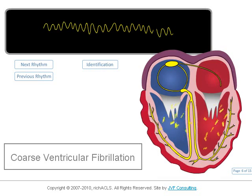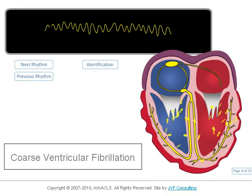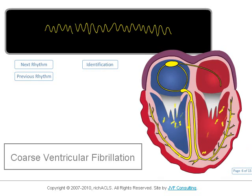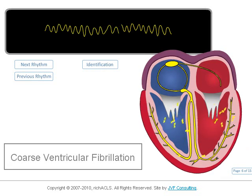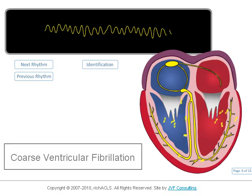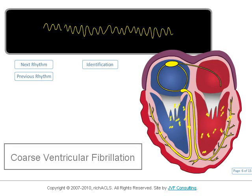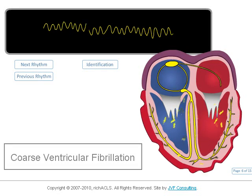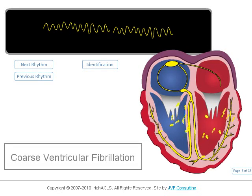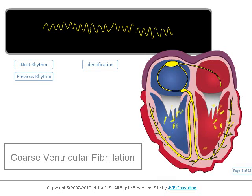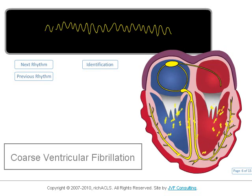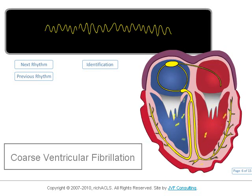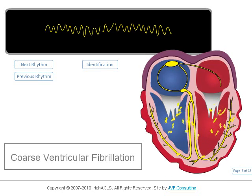Here is coarse ventricular fibrillation. Coarse ventricular fibrillation is often the result of what is called R-on-T phenomenon, where a PVC has landed on a T-wave causing this chaotic rhythm.